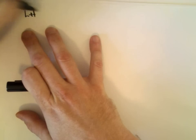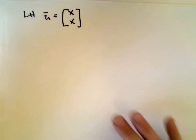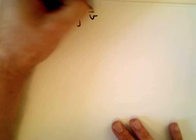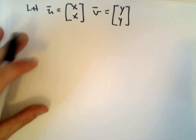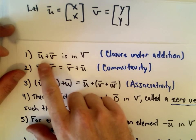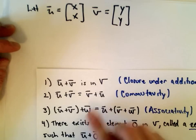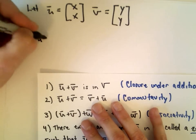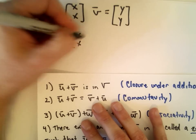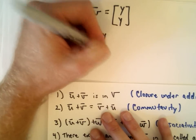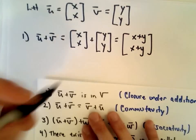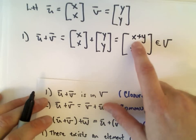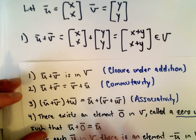Let vector u be the vector with components (x, x), and let vector v have components (y, y). Both are in ℝ² with equal components. The first thing we want to show is that u + v is in our vector space. Well, u + v = (x, x) + (y, y) = (x+y, x+y). Since the components are the same, it is definitely closed under addition.